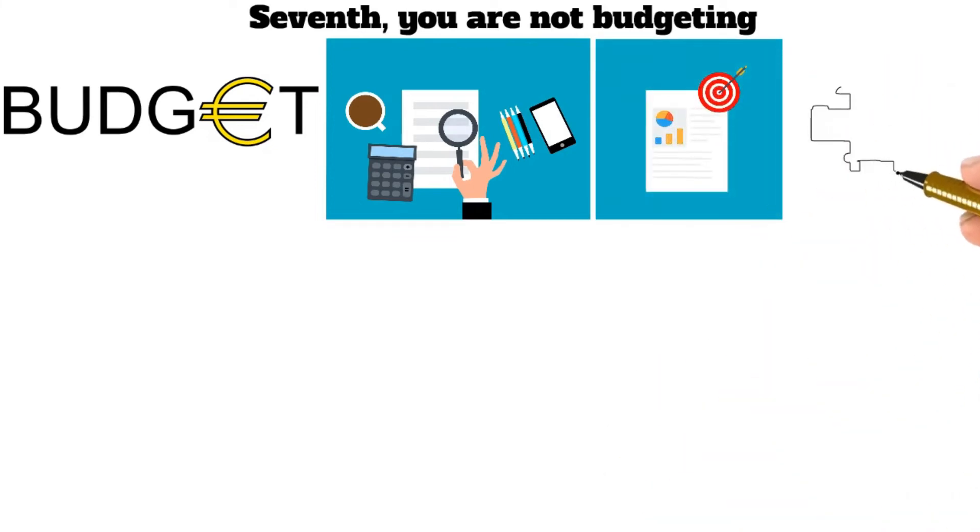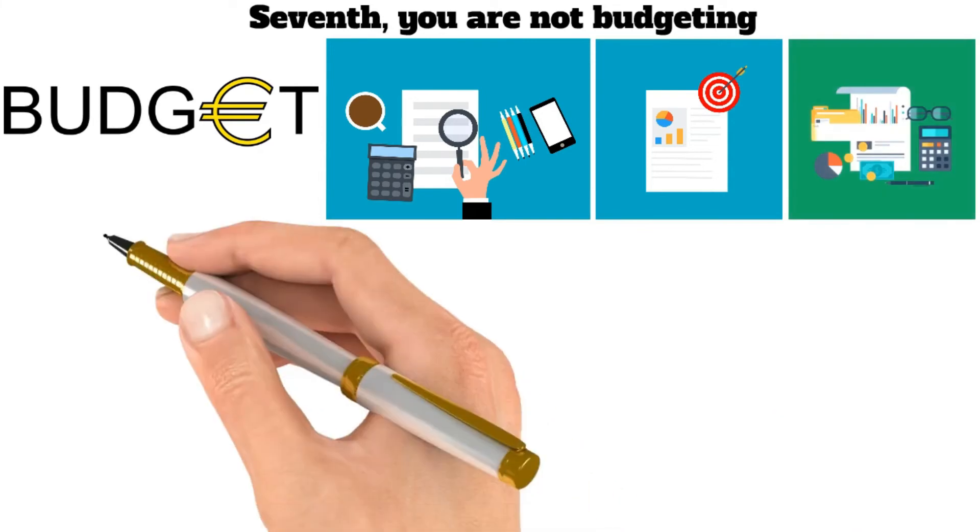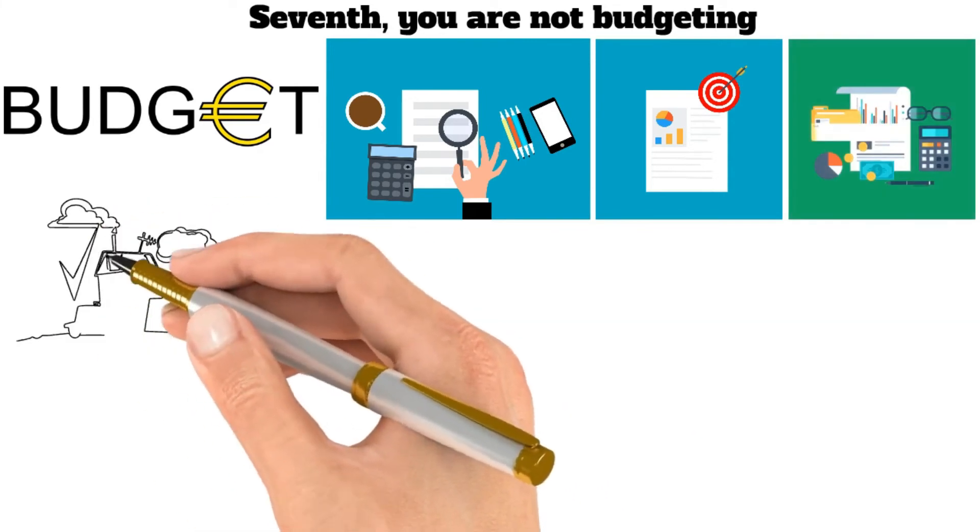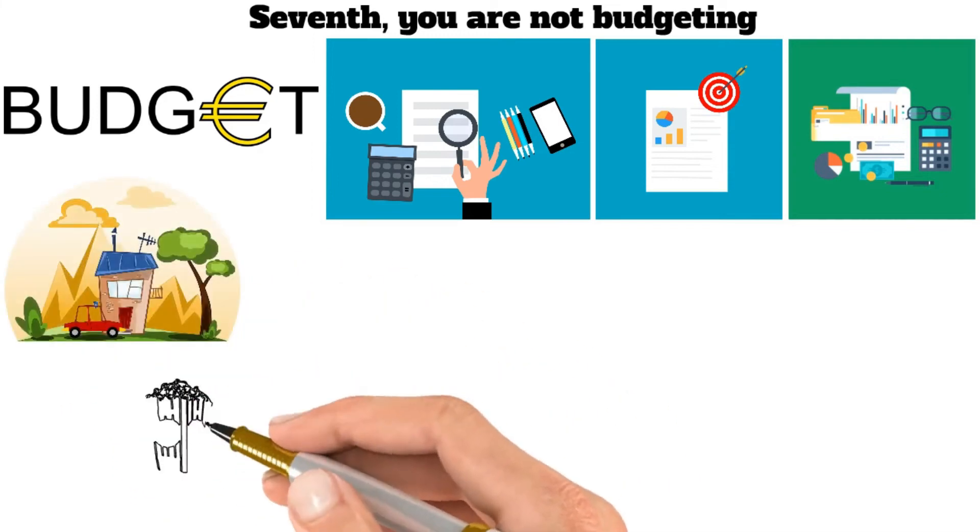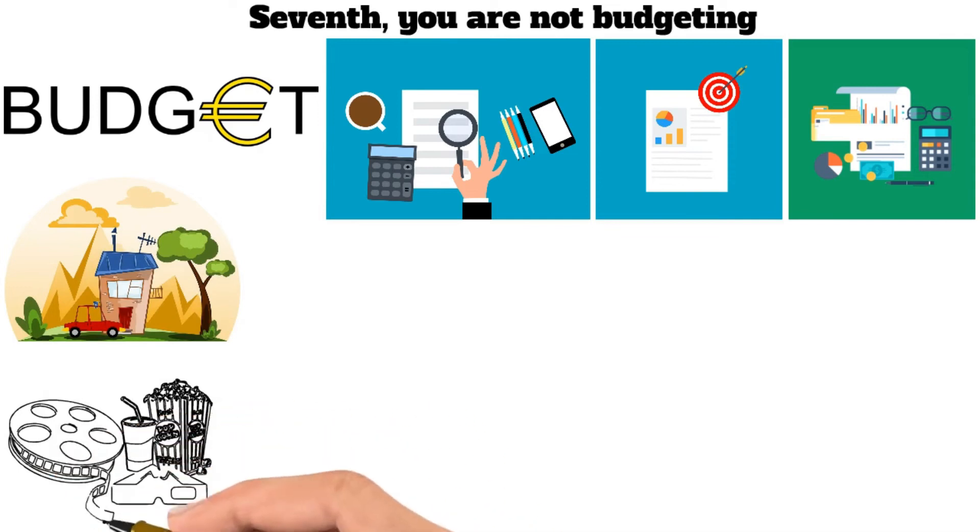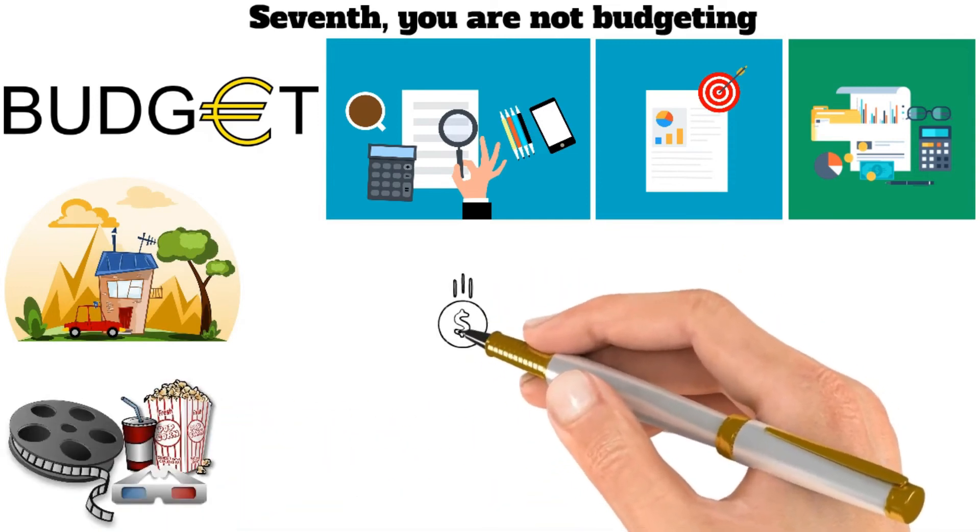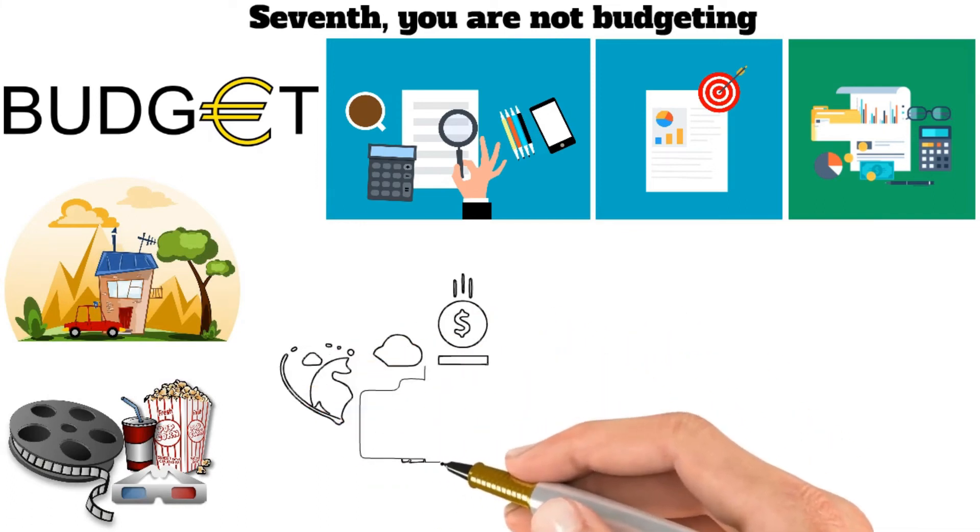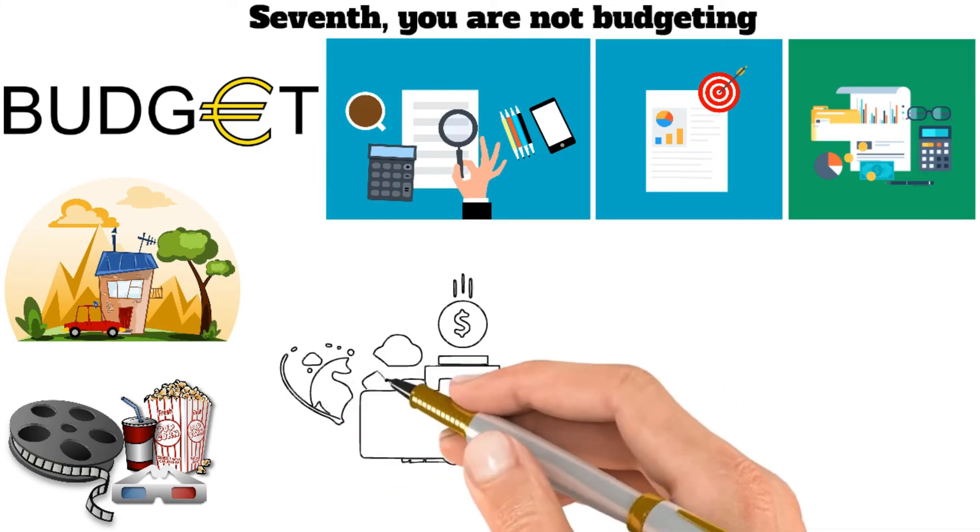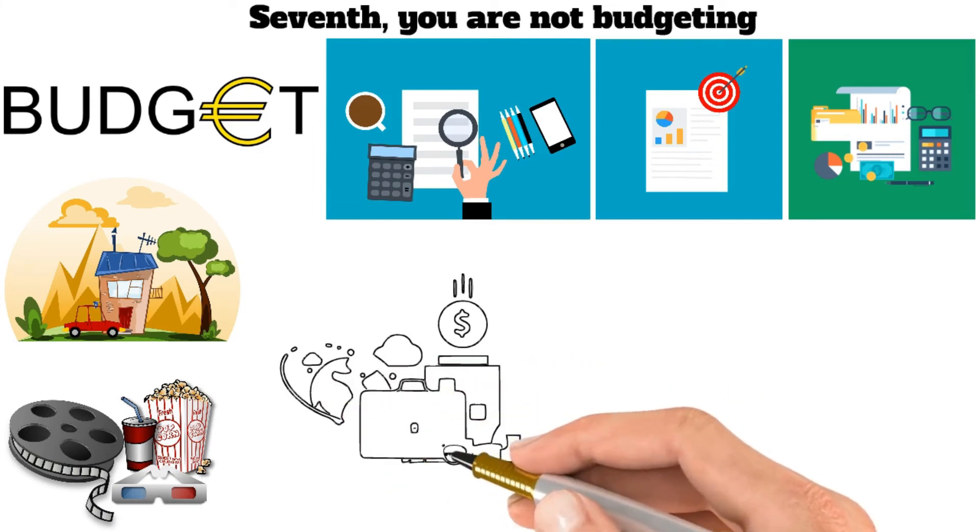There are a lot of money habits that can keep you broke, but one of the most common is failing to budget. A budget is an essential tool for managing your finances, but it only works if you stick to it. You set aside a specific amount of money each month for fixed costs like housing and transportation, and track your spending on variable expenses like food and entertainment. Without a budget, it's all too easy to overspend and find yourself in debt. So if you're serious about getting your finances under control, make sure to start by creating a budget and sticking to it.